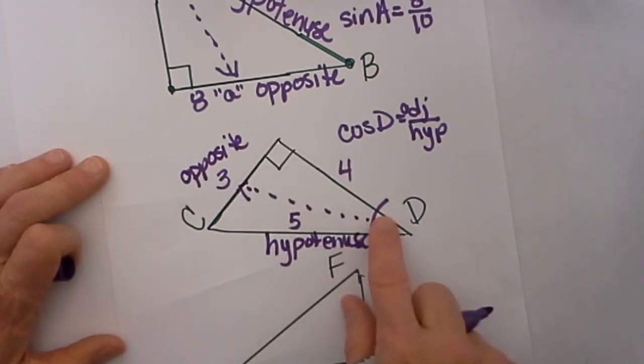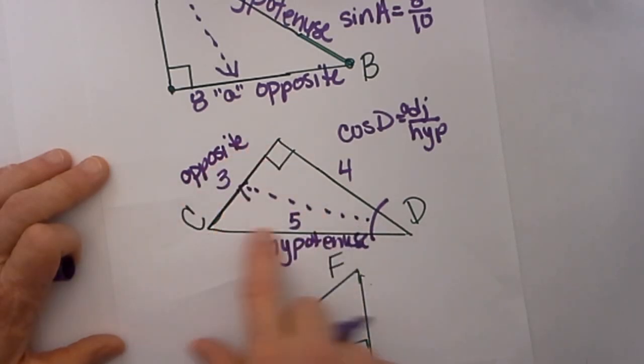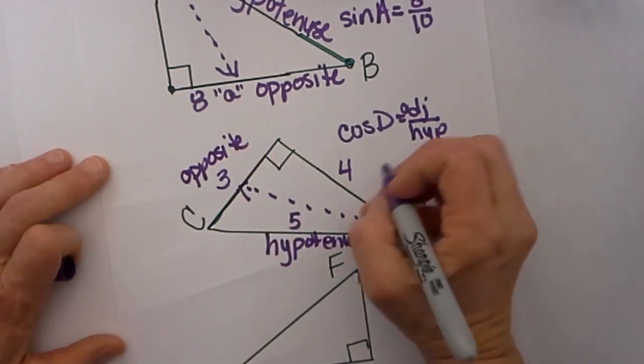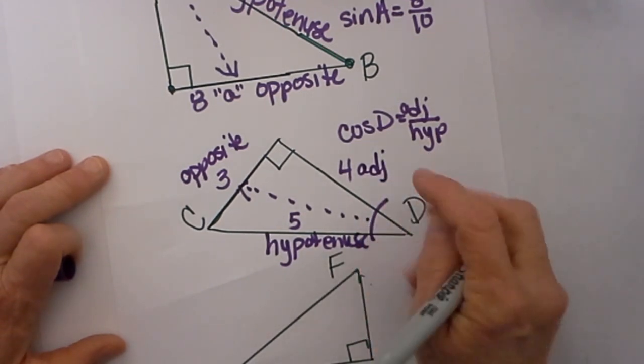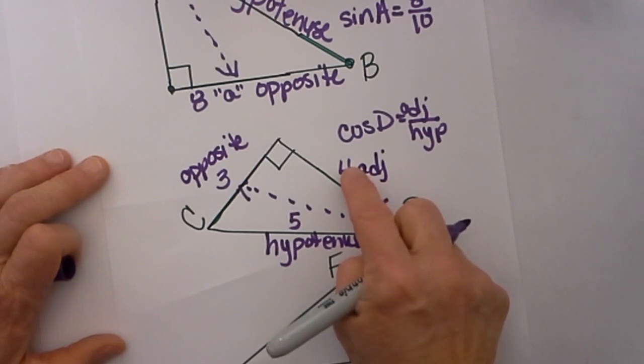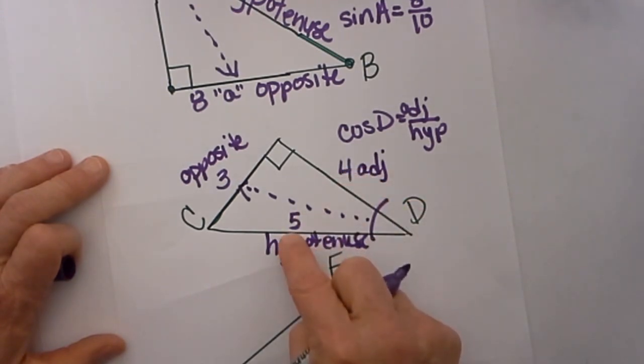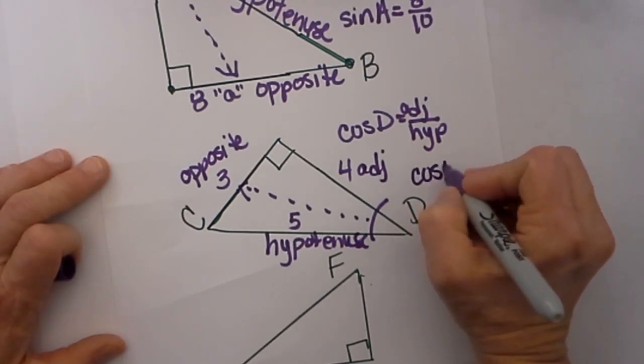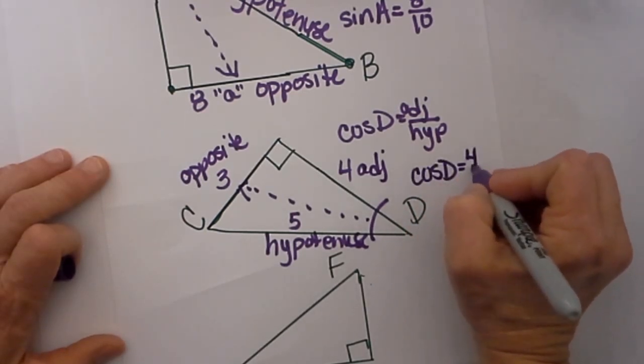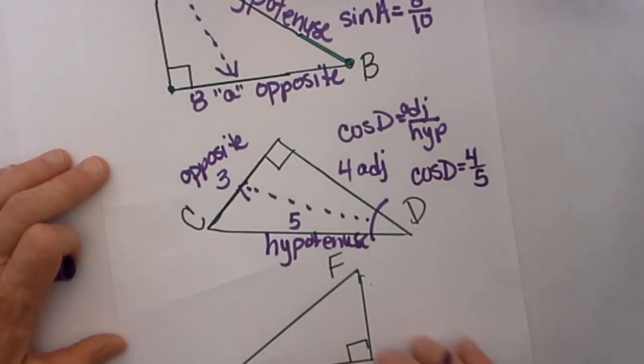I am going to use the ratio of the other two sides. Well if this side is opposite, this one is a hypotenuse, the only one left over is the adjacent side. And that makes sense, it is adjacent or next to angle D. So my adjacent over my hypotenuse would be the ratio of these two sides. So the cosine of D would equal 4 over 5.